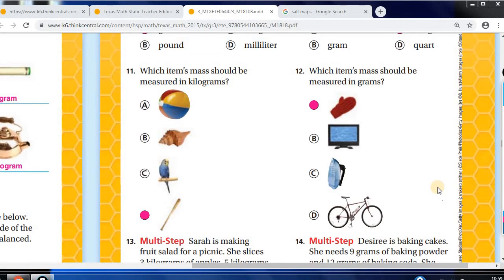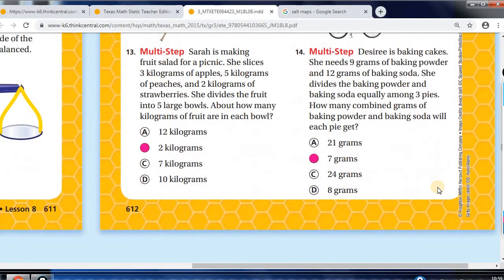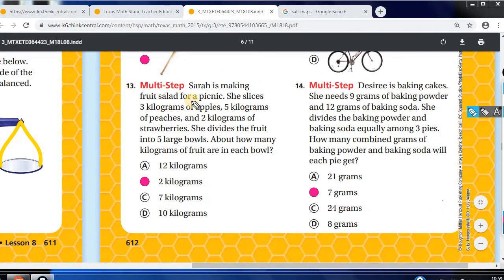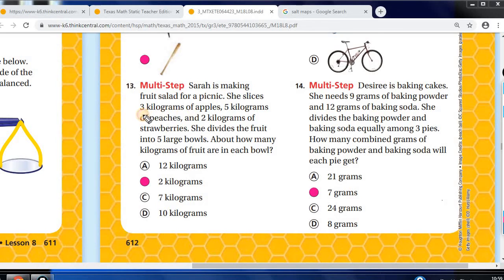Let's go to your multi-step questions. Sarah's making fruit salad for a picnic. She slices three kilograms of apples, five kilograms of peaches, and two kilograms of strawberries. She divides the fruit into five large bowls. How many kilograms of fruit are in each bowl? So the key, you add your kilograms of fruit. So five plus three is eight, plus two is ten. And you have them in five bowls, divided equally, so your answer would be two.